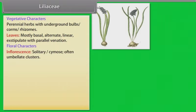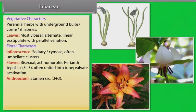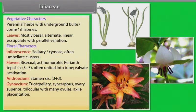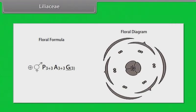Floral characters of Liliaceae: inflorescence solitary, cymose, often umbellate clusters; flower bisexual, actinomorphic; perianth — 6 tepals (3+3), often united into a tube, valvate aestivation; androecium — 6 stamens (3+3); gynoecium — tricarpellary, syncarpous, ovary superior, trilocular with many ovules, axile placentation. Fruit capsule or rarely berry. Seeds endospermic.